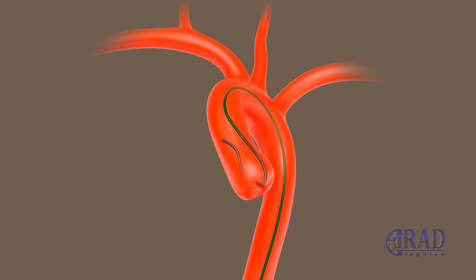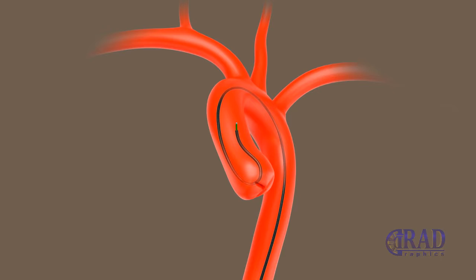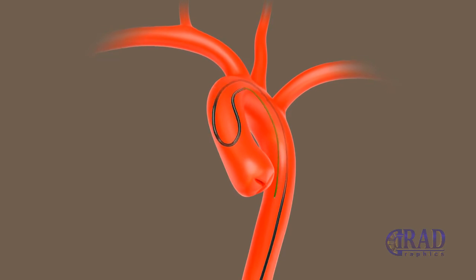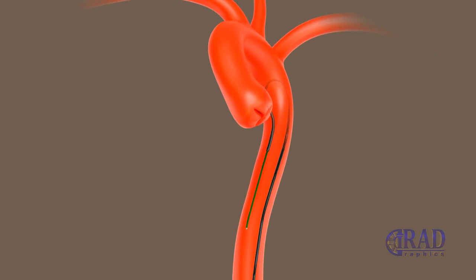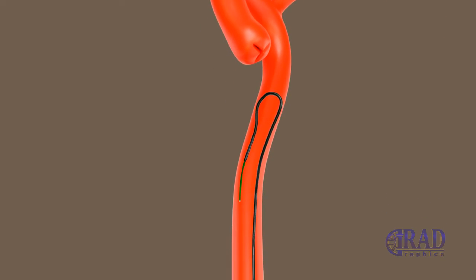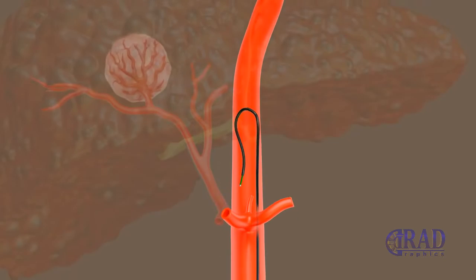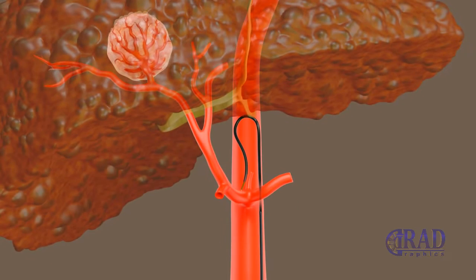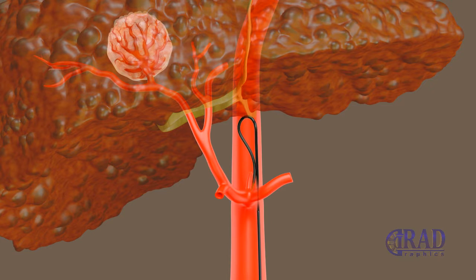Then, a long segment of the wire is re-advanced out of the catheter's tip, and this combination is pulled down to the level where the celiac trunk goes off of the aorta. As the catheter is pulled down, the wire is simultaneously retracted into the catheter until only one centimeter protrudes from the catheter's tip. This adjusted setup is then utilized to selectively engage the celiac trunk.